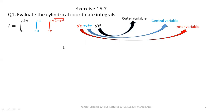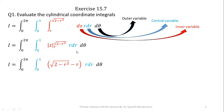The integration of dZ with respect to Z is simply Z. Applying the limits R to the square root of (2 minus R squared) using the fundamental theorem of calculus — upper limit minus lower limit — we have completed the process of integration and simplification with respect to Z.